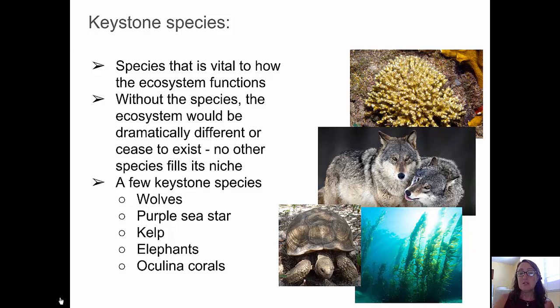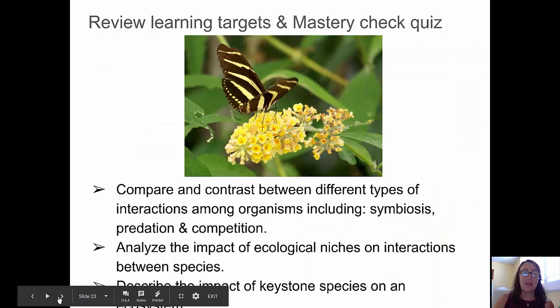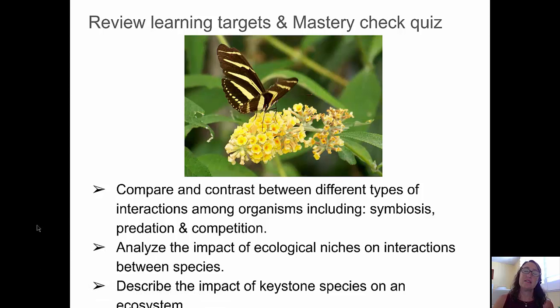A few examples of keystone species are wolves, the purple sea star, kelp, elephants, and alkalina corals. I think we're ready to look back at our learning targets and go ahead to the Mastery Chuck quiz.